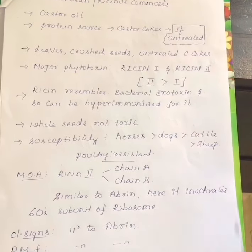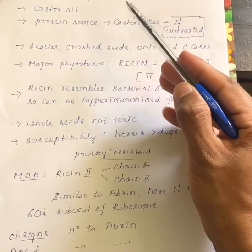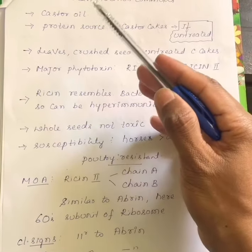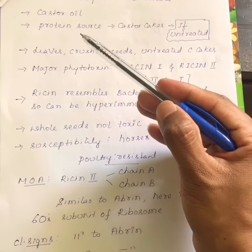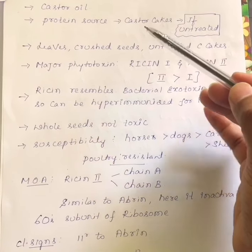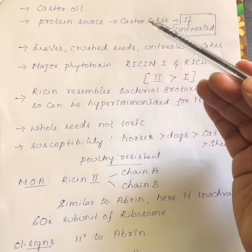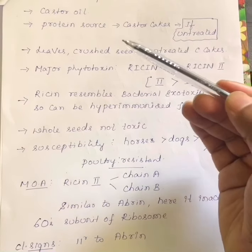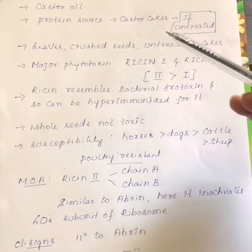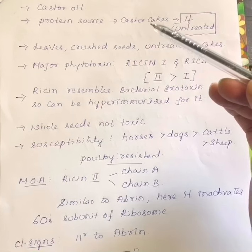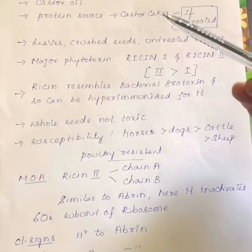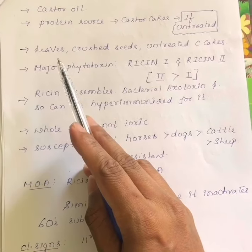The second plant containing lectins or toxalbumins is castor bean, Ricinus communis. In Kannada we call it 'arulbija.' Castor oil is extracted from this plant, and it is very commonly used as a protein source in the form of castor cake. Castor cake can be toxic if untreated. After extracting oil from the castor bean, the castor cake must be pre-treated or heated to a certain temperature before giving it to animals. If castor cake is given without any pre-treatment, it will definitely cause castor bean toxicity. Leaves and crushed seeds are also toxic.